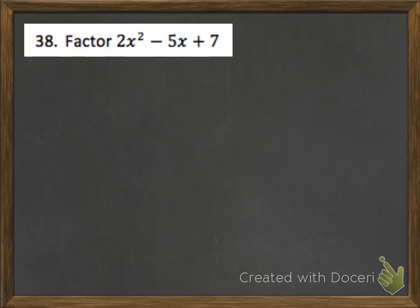Problem 38 wants us to factor 2x squared minus 5x plus 7. There's a typo in the problem — it's minus 5x, not 4x. Let's go ahead and work it out. Because there's a number in front of the x squared, I can't jump straight to the box method. Instead, I have to use the AC method.